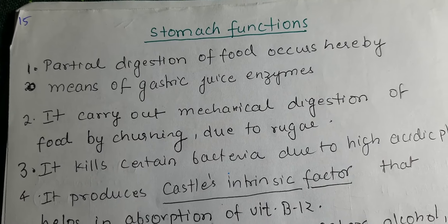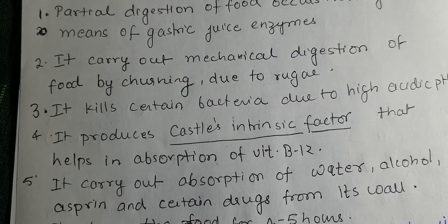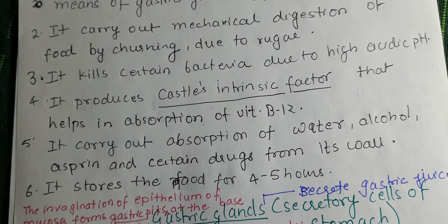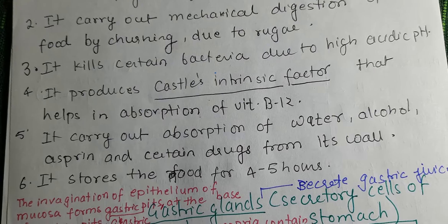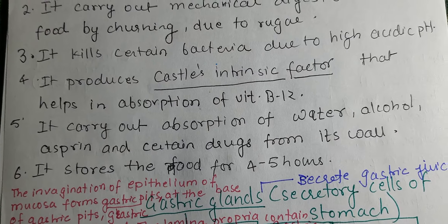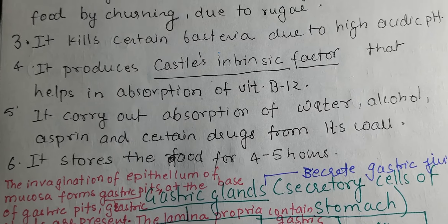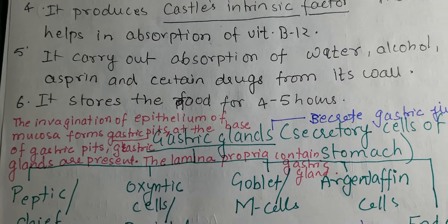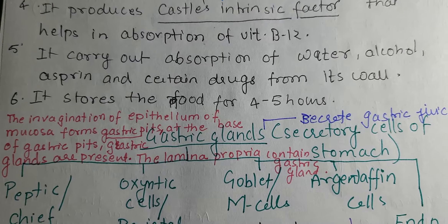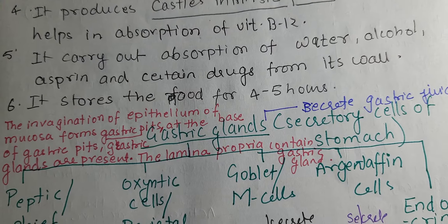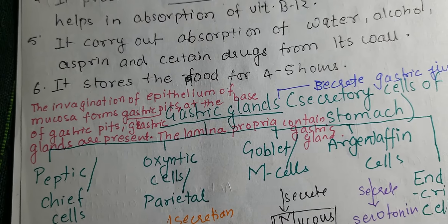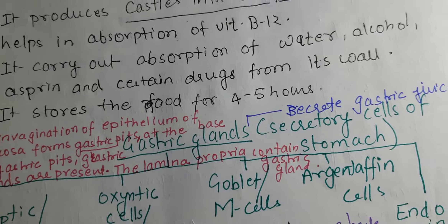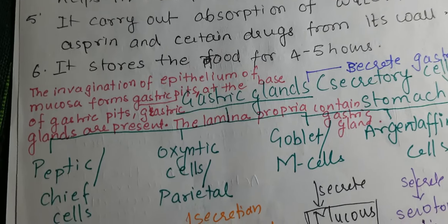The stomach carries out mechanical digestion by churning, due to the presence of rugae. It kills certain bacteria due to the high acidic pH. It produces Castle's intrinsic factor, which helps in the absorption of vitamin B12 — vitamin B12 is absorbed in the ileum, but Castle's intrinsic factor required for its absorption is produced in the stomach. It also carries out absorption of water, alcohol, aspirin, and certain drugs directly from its mucosal wall.